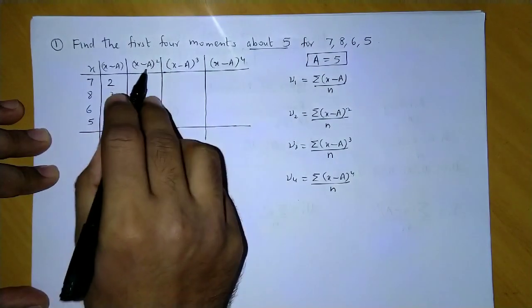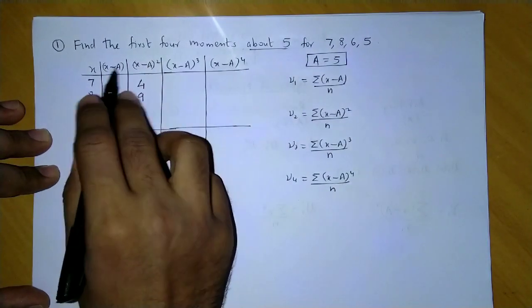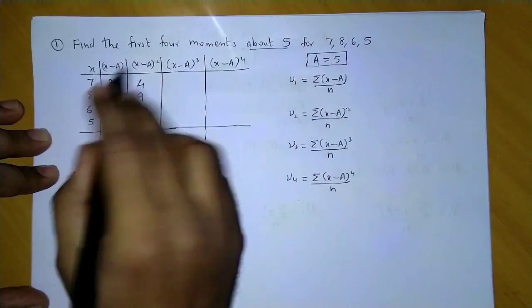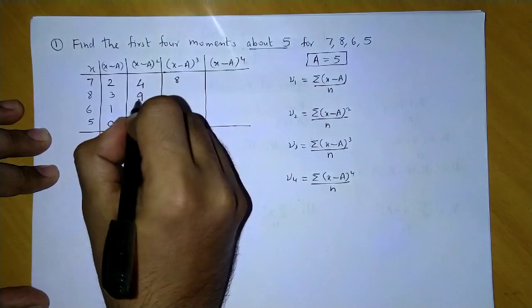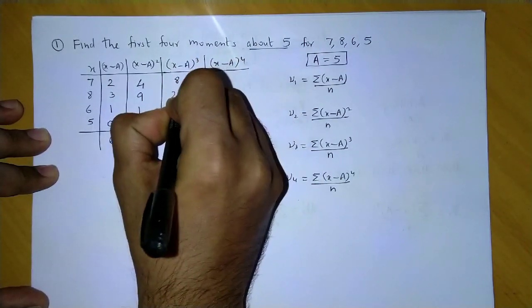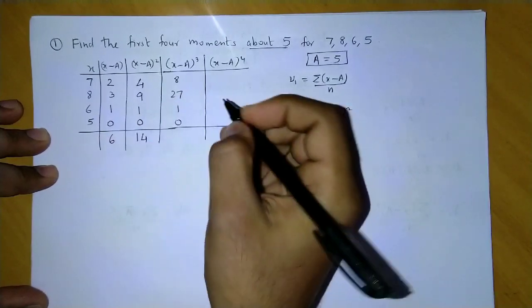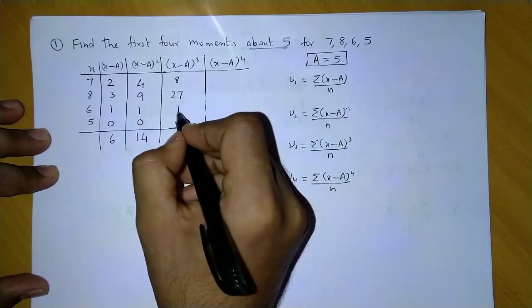Now we need the cube. If you multiply the square by (x minus a), you get the cube value. So 4 into 2 becomes 8, 9 into 3 is 27, 1 into 1 is 1, and this one is 0. So 27 and 1 is 28, plus 8 gives me 36.